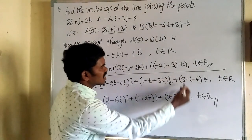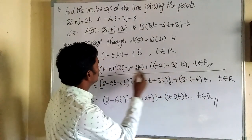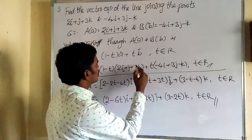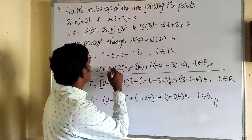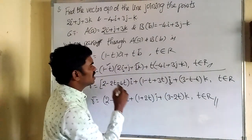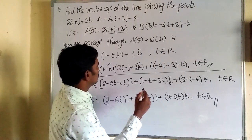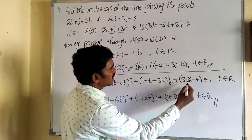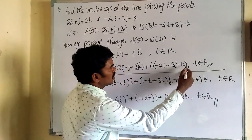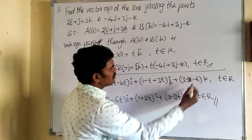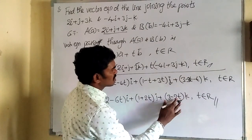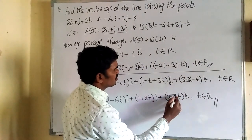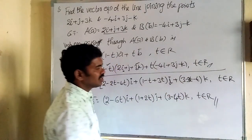Question 9: Find the vector equation of the plane passing through the points i − 2j + 5k, −5j − k, and −3i + 5k. Three points are given, so this is a plane equation.